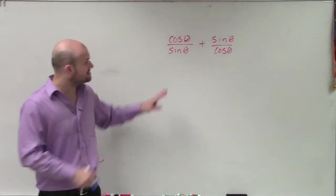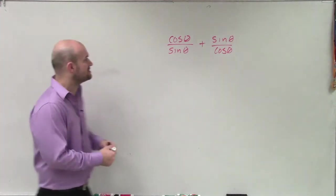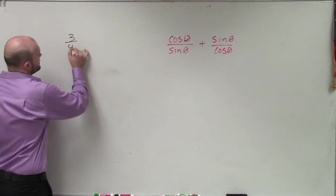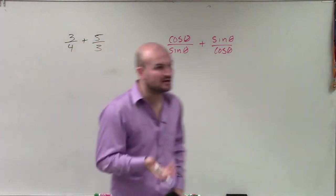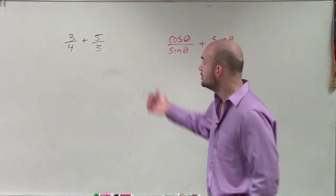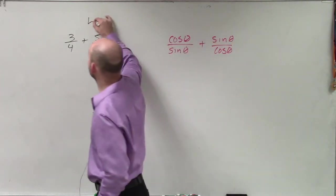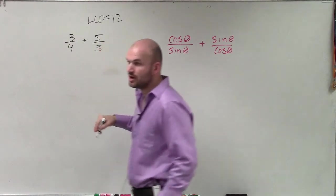So Kelsey, when looking at this, I noticed that, remember, just the same thing. If I had 3/4 plus 5/3, I can't combine them unless I have common denominators. So to find common denominators, I'd have to determine what is the LCD, which in this case is going to be 12. So therefore, I want both denominators to be in the form of 12.